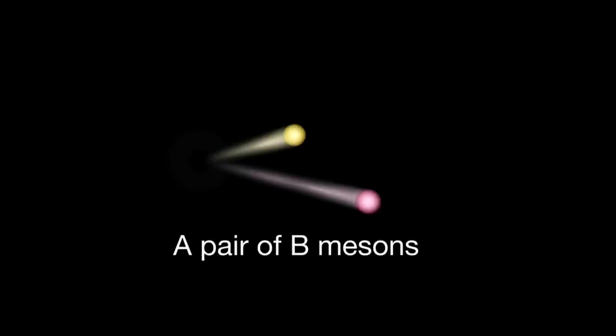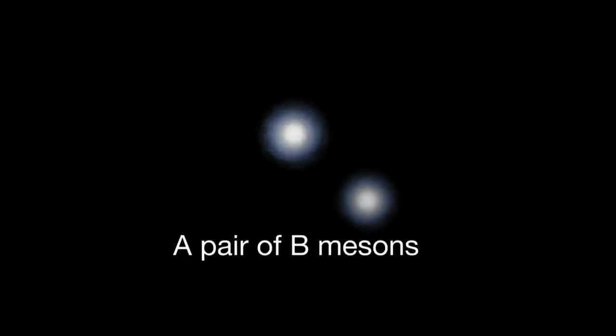This annihilation transforms the electron and positron into a pair of B mesons, which consist of bottom quarks. B mesons quickly decay into several lighter particles, which fly away in all directions.